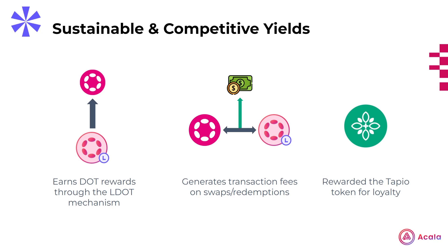TDOT also has the ability to not only be sustainable with its yield, but also be very competitive when it comes to what rewards it can offer users. The first aspect that generates yield is of course the LDOT component of TDOT, which is able to contribute to the overall reward from staking and serves as a way for users to compound their liquid staking strategy.